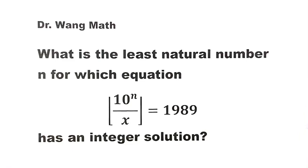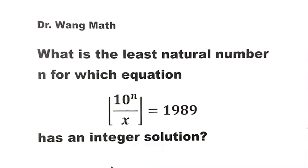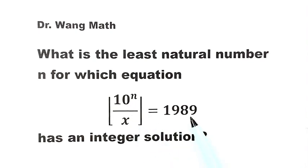In this video, we'll be solving the equation problem from the USSR Math Olympiad. The question is: what is the natural number n for which this equation has an integer solution? The equation is the floor of 10 to the power n over x equals 1989.